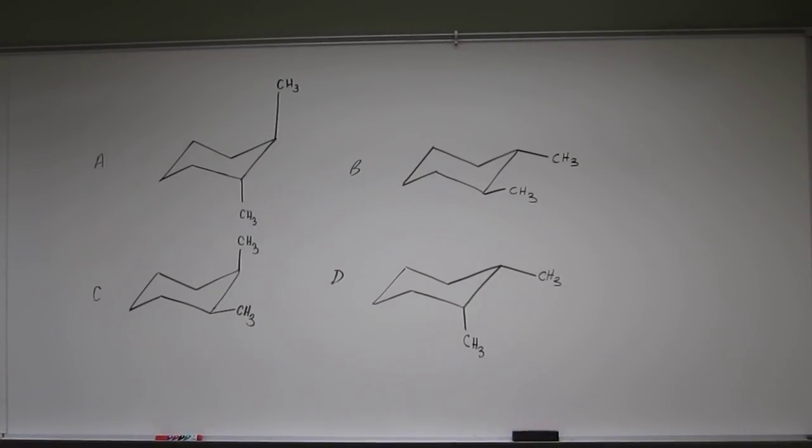Let's try another one of these chair conformer questions. This one asks which one of these structures depicts a trans isomer and which ones depict a cis isomer?